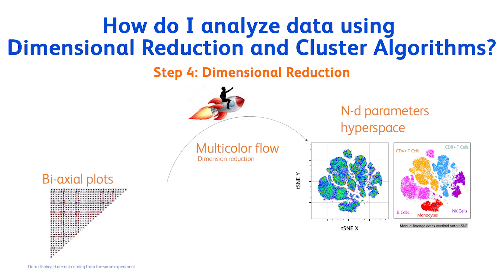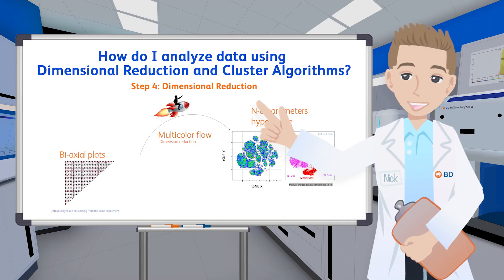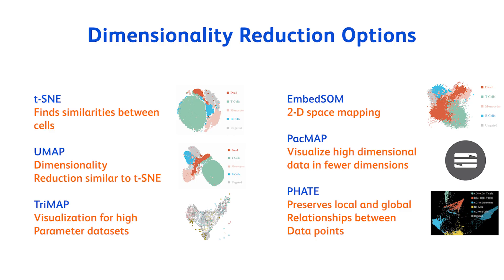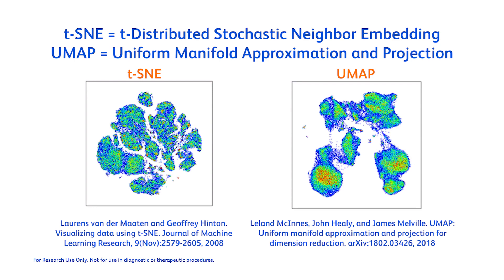Now that our sample is cleaned up and concatenated, it's time for some dimensional reduction. The goal of dimensional reduction is to easily visualize our multi-parameter data in a single two-dimensional plot while preserving the overall structure of the data as much as possible. Events with a similar multi-dimensional expression pattern are grouped together within the dimensionally reduced data space. Within FlowJo, we currently have six dimensional reduction algorithms: t-SNE, UMAP, TRIMAP, PACMAP, and FATE. The most currently used in the field are t-SNE and UMAP.